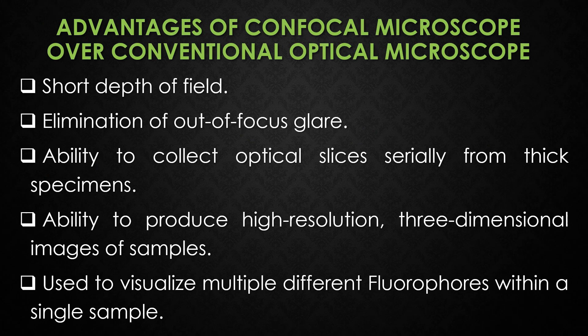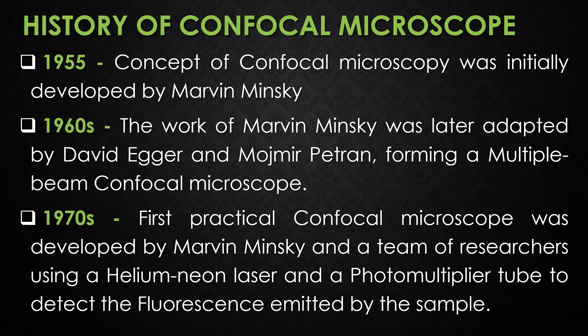Some advantages of the confocal microscope over conventional optical microscopes are: first, short depth of field; second, elimination of out-of-focus glare; third, ability to collect optical slices serially from thick specimens; fourth, ability to produce high resolution three-dimensional images of samples; and fifth, confocal microscopes can be used to visualize multiple different fluorophores within a single sample.